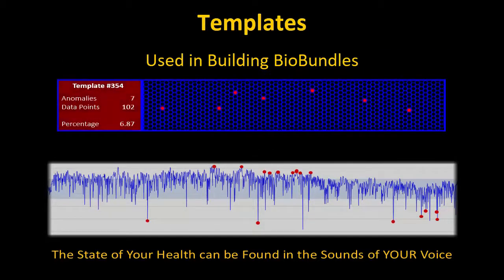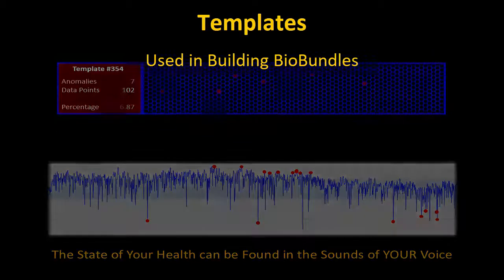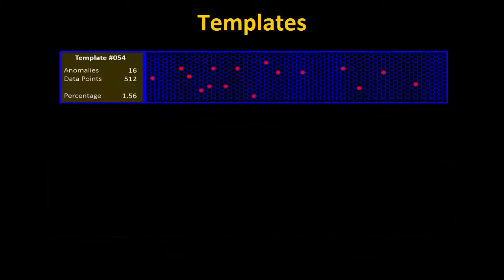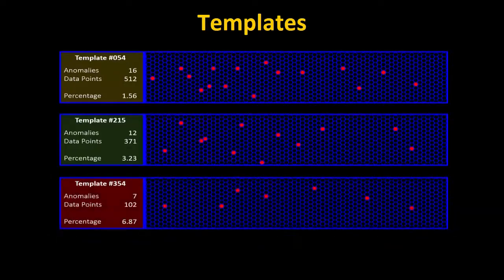In addition, due to countless symbiotic relationships in the body, one anomaly will often activate several templates.